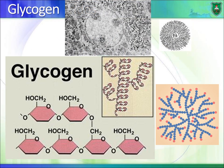Glycogen is a storage polysaccharide in animals and humans, with the liver being the main storage organ. An electron microscopy image of a liver cell shows glycogen molecules as black dots. Zooming into the glycogen molecule reveals it contains many glucose residues.